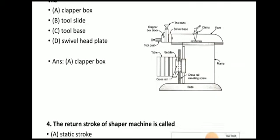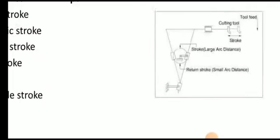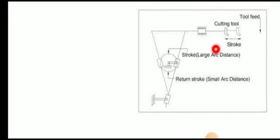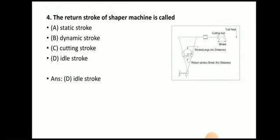Next question: the return stroke of the shaper machine is called the idle stroke. In a shaper machine, cutting takes place only during the forward stroke. During the return stroke, no cutting takes place, so the return stroke is also known as the idle stroke.